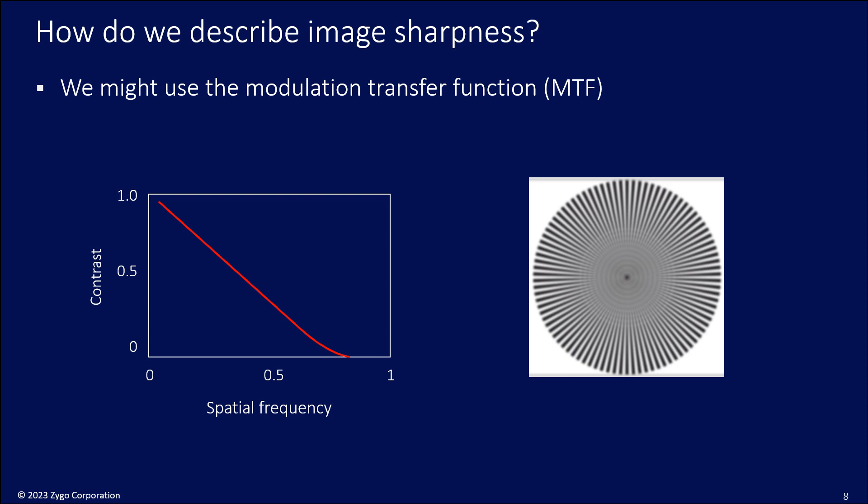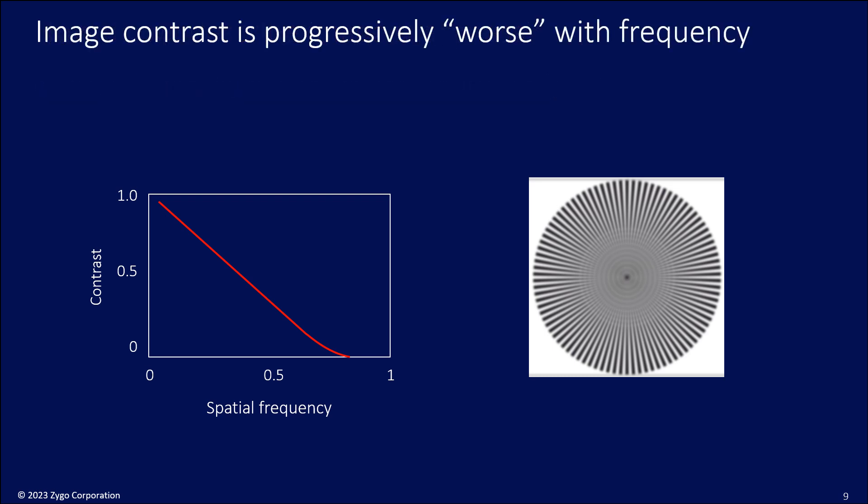So we could use the modulation transfer function. This is something that this crowd is familiar with. So on the right-hand side is a resolution target, and on the left-hand side is that resolution target converted into some kind of MTF. The interesting thing about this MTF is that between these limits of the field of view and the lateral resolution, we have this continuously declining response. So the image contrast is actually progressively worse with spatial frequency. Maybe this is something we could fix.